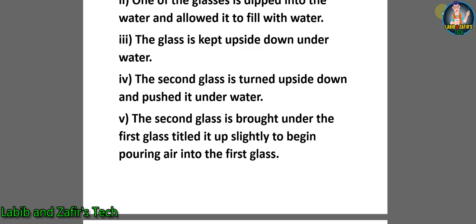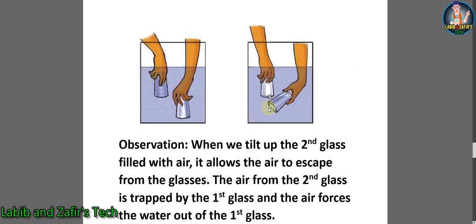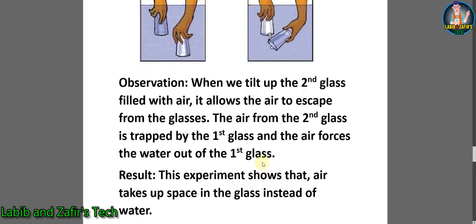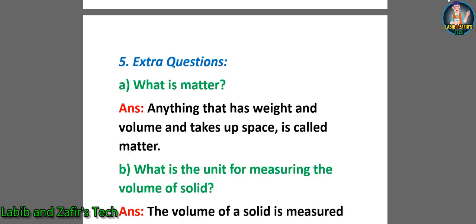Here is the experiment figure. You can see that we have dipped one glass and allowed it to fill with water, and we dipped another glass but did not allow it to fill with water. Observation: when we tilt up the second glass, it allows the air to escape. The air from the second glass is trapped by the first glass, and the air forces the water out of the first glass. Result: this experiment shows that air takes up space in the glass instead of water.